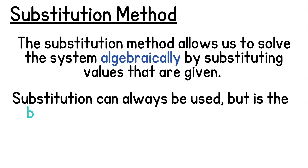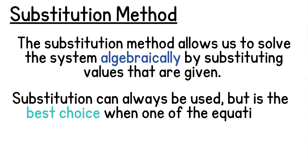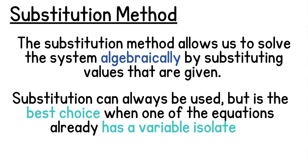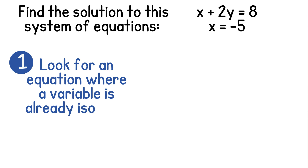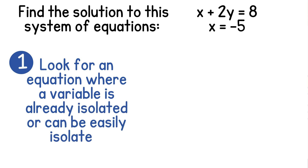Substitution can always be used, but it's the best method when one of the equations already has a variable isolated. So let's look at an example. We'll find the solution to this system of equations using substitution, where x plus 2y equals 8 and x equals negative 5. Our first step is to look for the equation where a variable is already isolated or can be easily isolated. We can see that the bottom equation of x equals negative 5 is already isolated, so we'll choose this one.